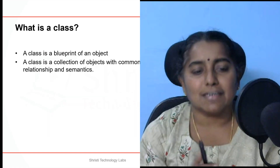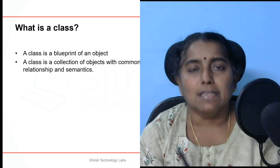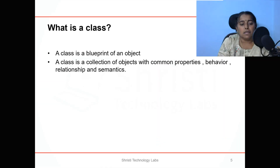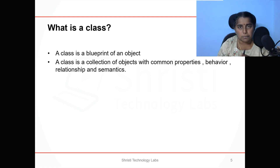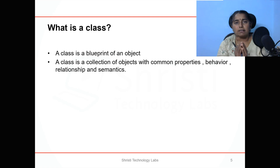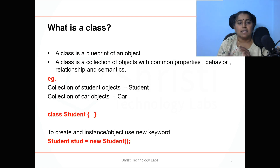What is a class? A class is a blueprint of an object — it's like a template. The class defines what an object should have. A class is a collection of objects with the common properties, behavior, relationships, and semantics. If I talk about a student, one student has a set of properties. If I take a collection of students, it becomes a student class. A collection of car objects becomes a car class.